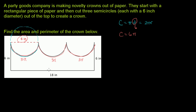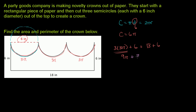Now we're ready to figure out the perimeter. We have three arcs of 3 pi each, so it's going to be 3 times 3 pi, plus 6 inches on the left side, plus 18 inches along the bottom, plus 6 inches on the right side. That gives us 9 pi for the arcs, plus 6 plus 18 plus 6, which is 30.